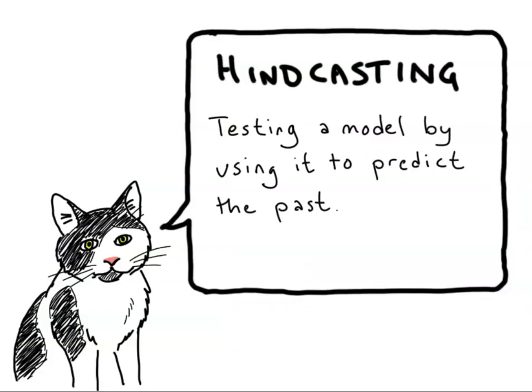We can test a model by trying to predict the past, then comparing the results to what really happened. If a model is good at predicting past climate, we can trust that it will be reliable in predicting future climate. This is known as hindcasting.